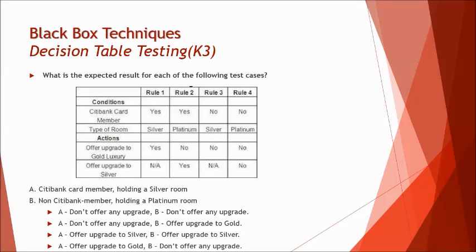Let's look at a quick example here to understand what we are talking about. The question here says, what is the expected result for each of the following test cases, where the test cases are at the bottom which says A: Citibank card member holding a silver room, and B: non-Citibank card member holding a platinum room. But let's look at the table first and understand how to derive these things.